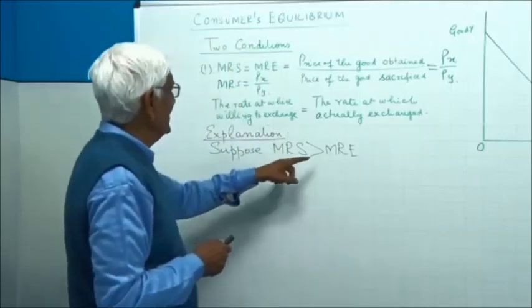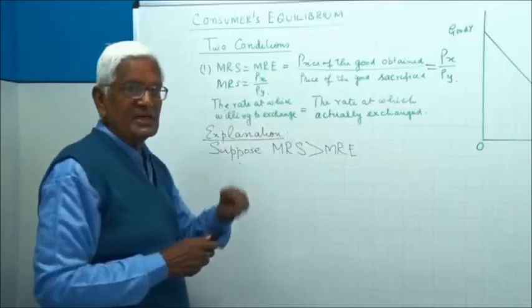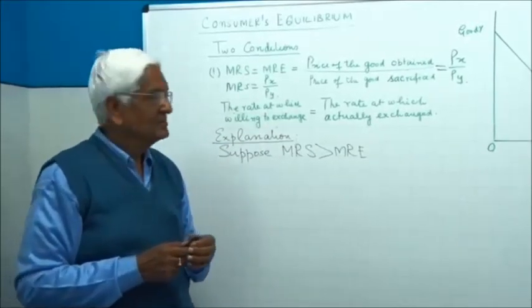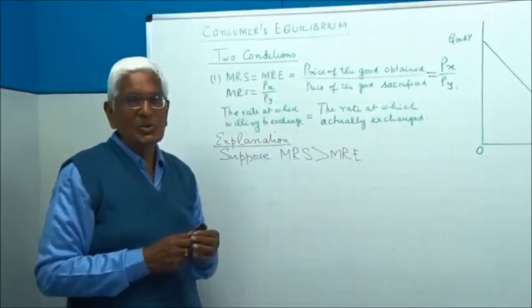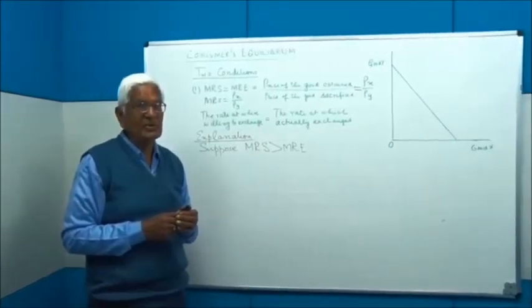We have just stated what is MRS - the rate at which consumer is willing to exchange, and MRE - the rate at which goods are actually exchanged. The rate he has to give in order to get X.